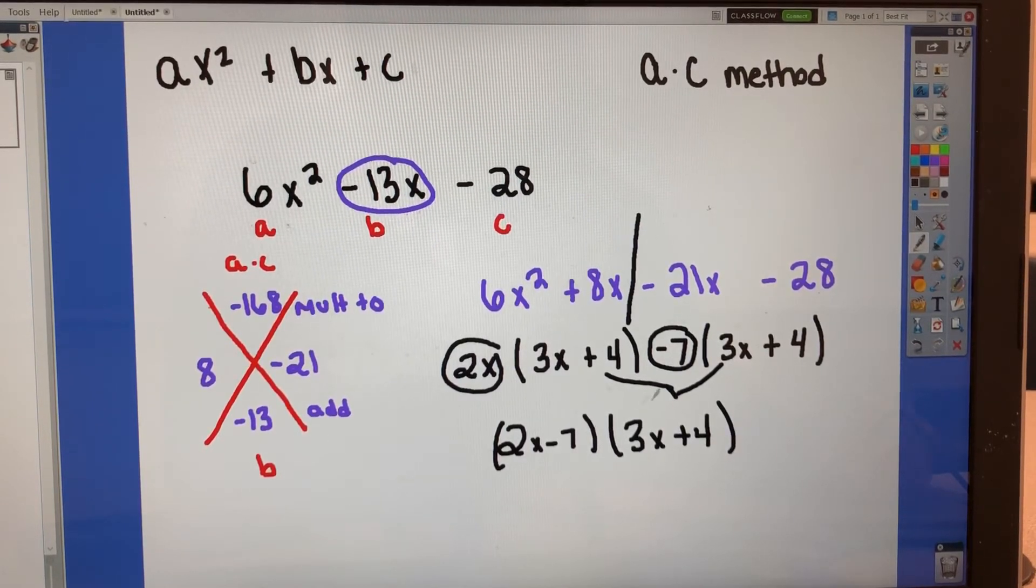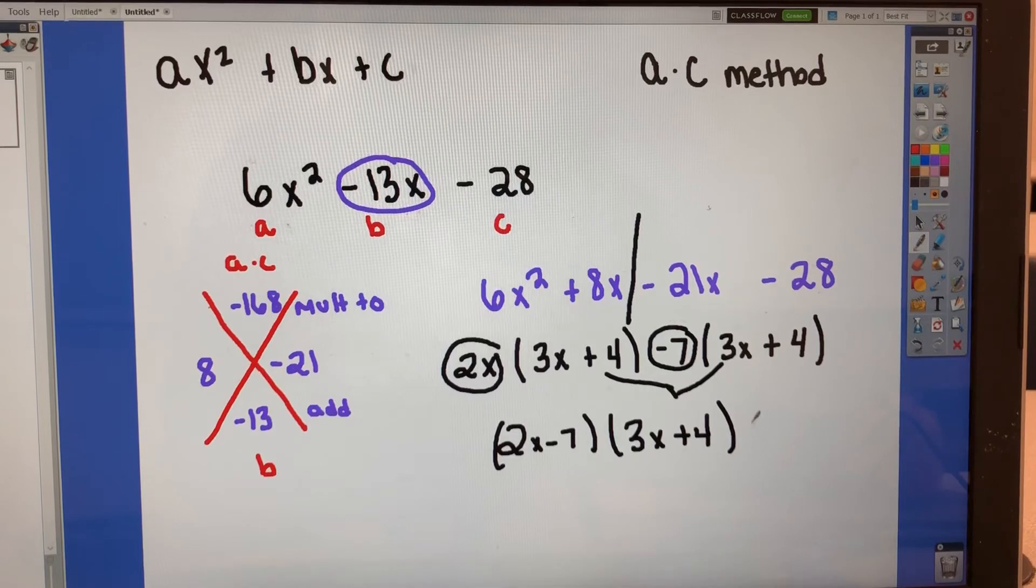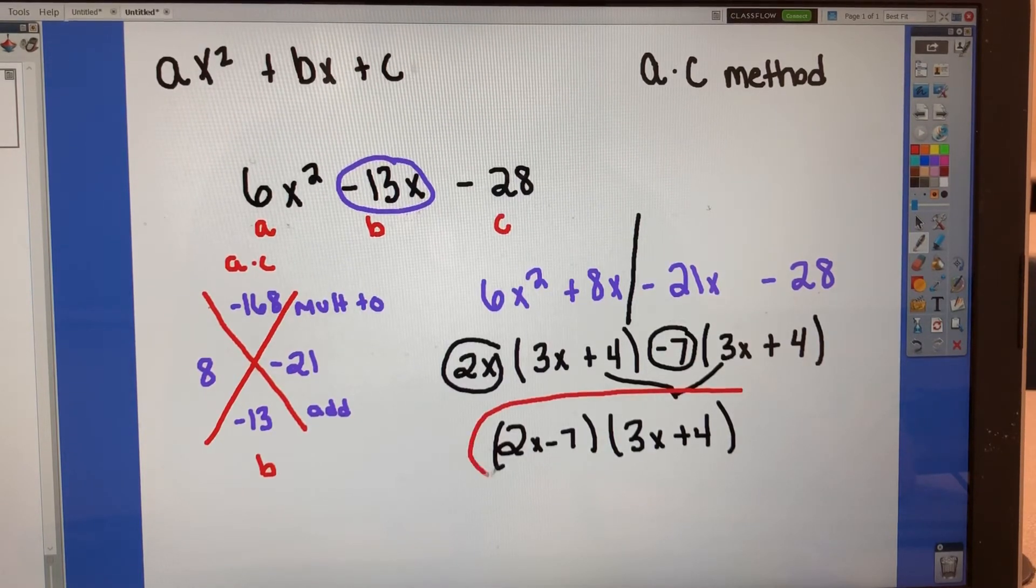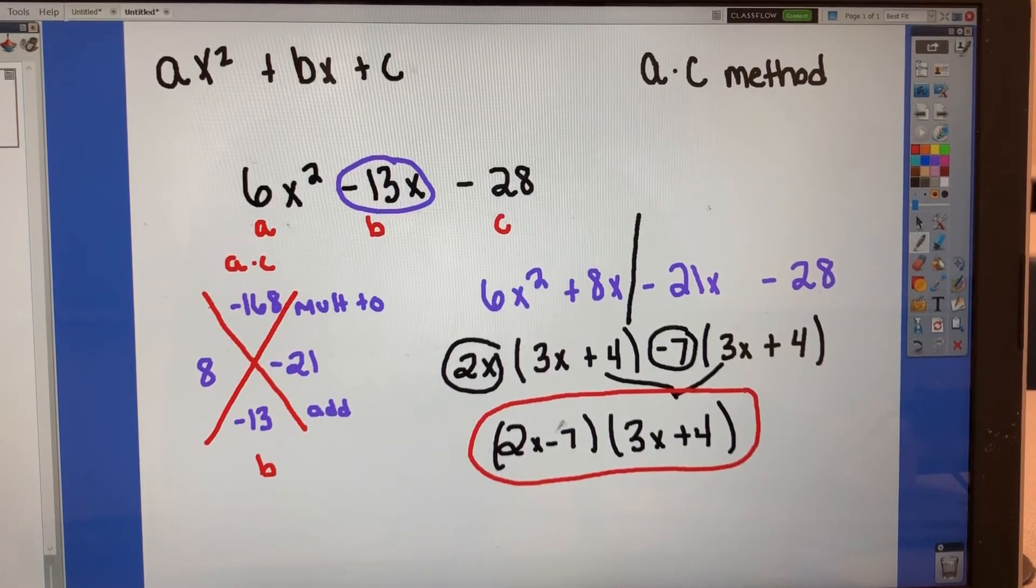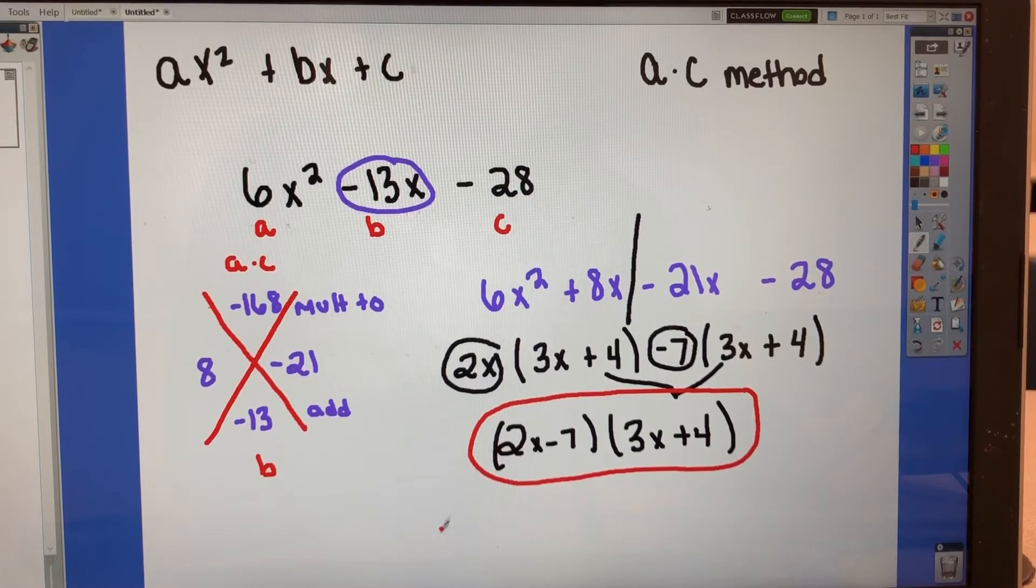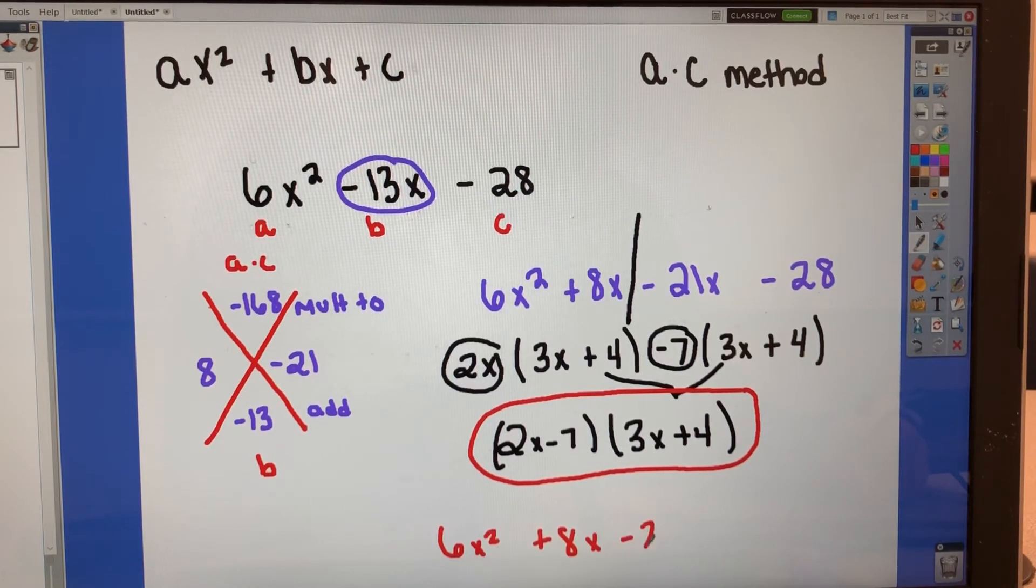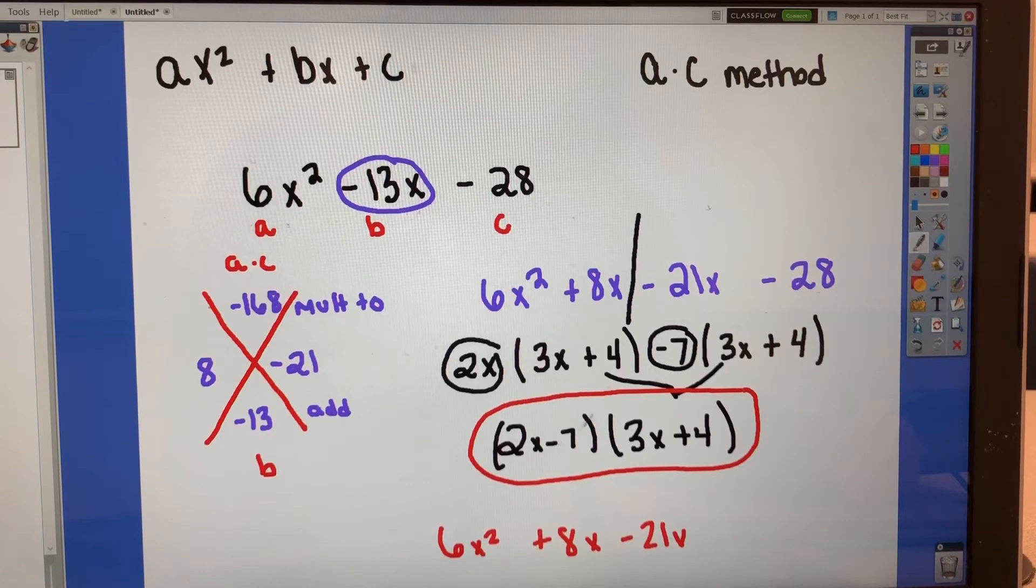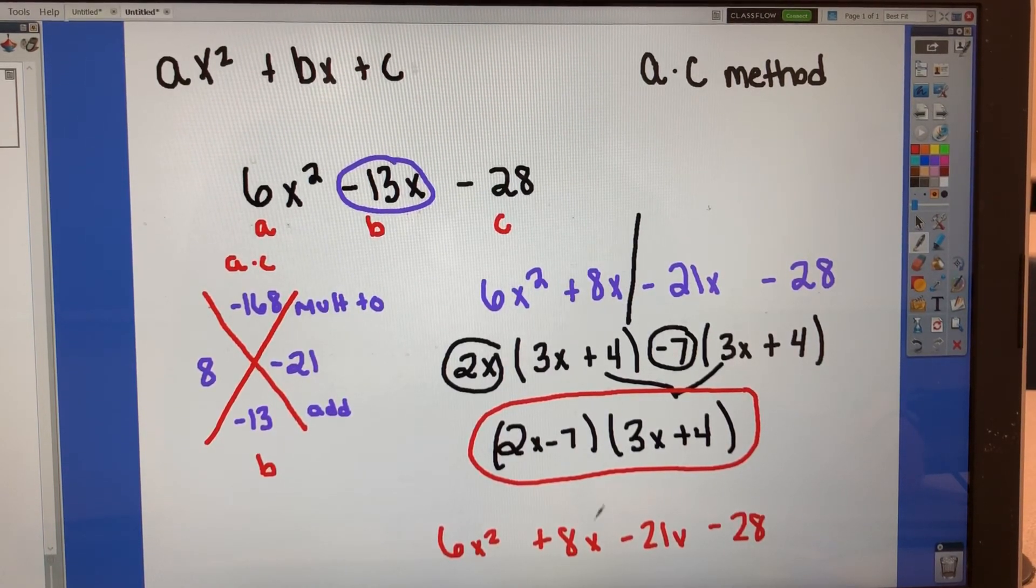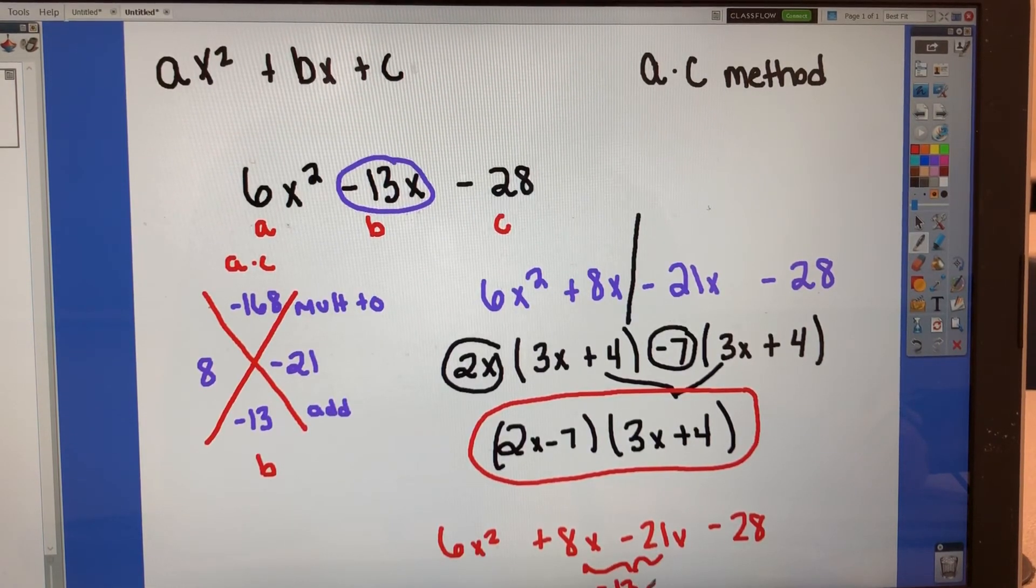So now I've successfully factored this. I do want to check my work to make sure that this is correct. So if I FOIL this, I have 2x times 3x. I get 6x squared. 2x times 4, 8x. Negative 7 times 3x, negative 21x. Negative 7 times 4, negative 28. I'm back up to here. If I combine these two terms, I get my negative 13x.